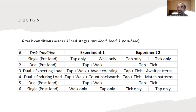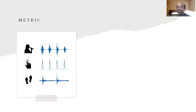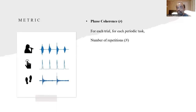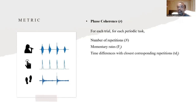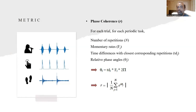The metric we used to measure synchronicity was phase coherence. For each trial and each periodic task, we measured the number of repetitions, momentary rates, and the time differences that the periodic task had with the corresponding repetitions of the other task — where corresponding repetitions refer to those that are temporally the most proximal. We calculated relative phase angles as the product of time differences and momentary rates, then multiplied by 2π to convert them into radians so that we could apply the global order parameter of the Kuramoto model to calculate the phase coherence value R, which falls between 0 and 1 — 1 referring to total synchrony and 0 meaning absolutely no synchrony.